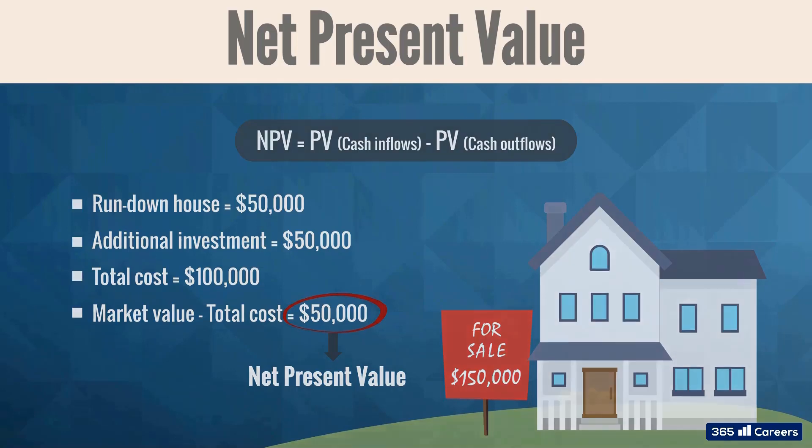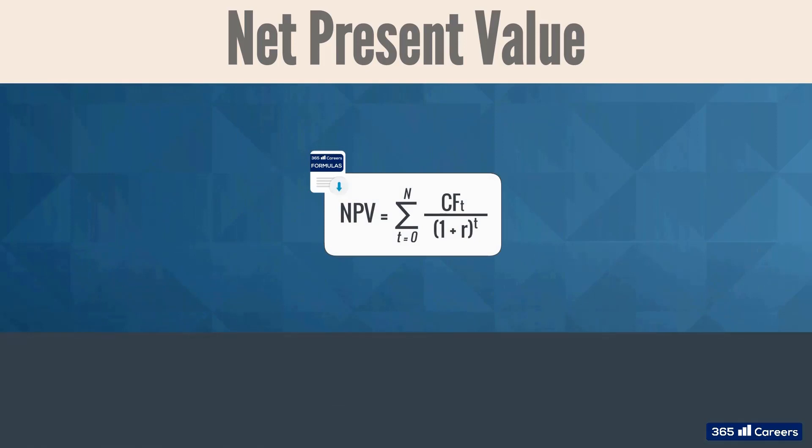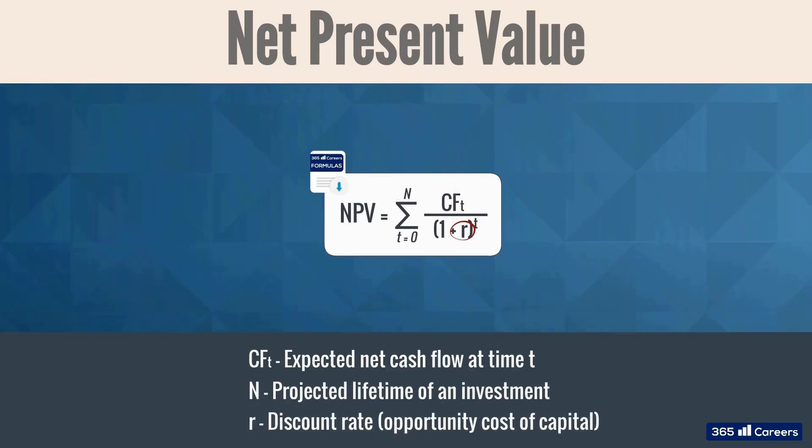Now, let's organize these cash flows into a formula. The term CFT is the expected net cash flow at time T, N is the projected life of the investment, and R is the discount rate, also known as the opportunity cost of capital.